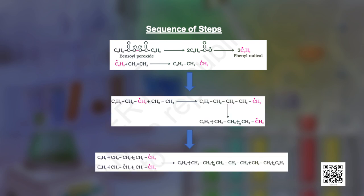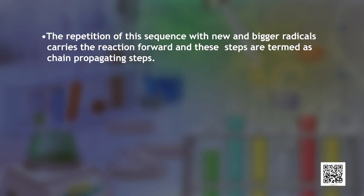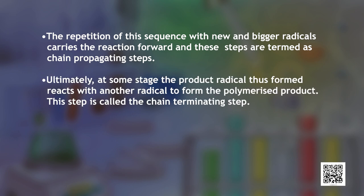As this radical reacts with another molecule of ethene, another bigger sized radical is formed. The repetition of this sequence with new and bigger radicals carries the reaction forward, and these steps are termed as chain propagating steps. Ultimately, at some stage the product radical formed reacts with another radical to form the polymerized product. This step is termed as the chain terminating step.